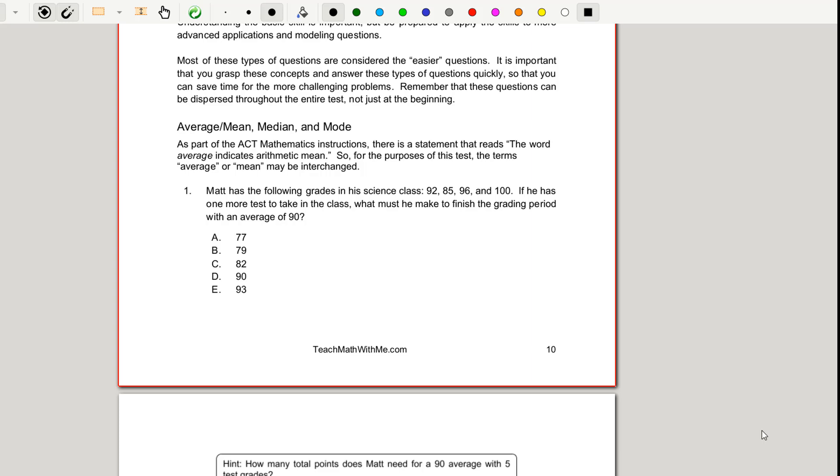For this first question we're asked to find the test grade that we're looking for if we want the final average to be a 90. We are given four scores already and we want to know that fifth score with this 90 average. Based on the definition of average, the 90 is going to be equal to all five scores added up in our numerator divided by five.